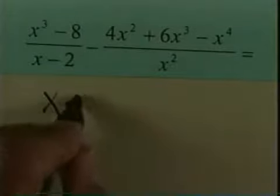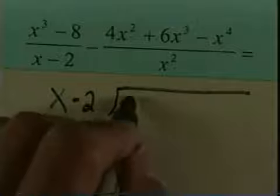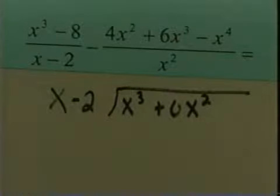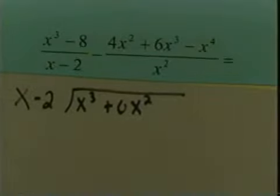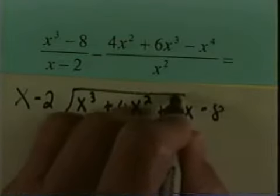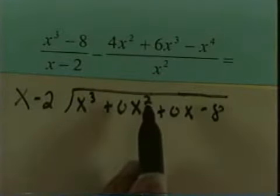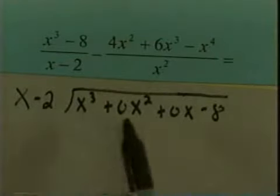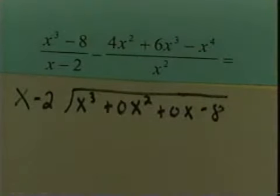So I'm dividing x minus 2 into x cubed plus 0x squared plus 0x minus 8. I had to put in the placeholders. I have to go x cubed, x squared, x to the first, and then x to the zero. We had no x squared and no x term, so therefore the coefficients would be the understood 0.